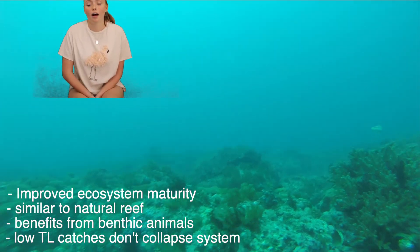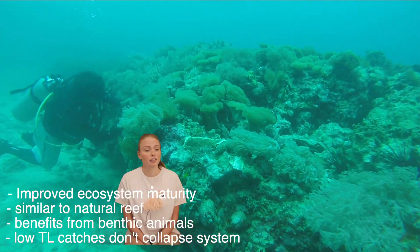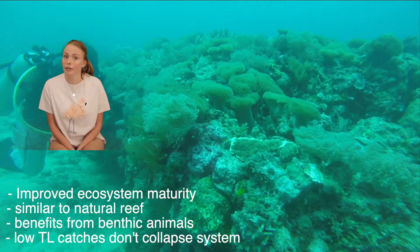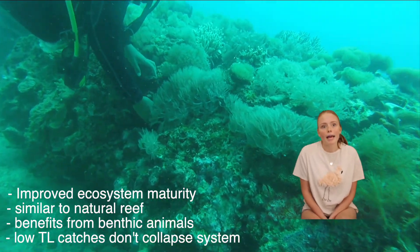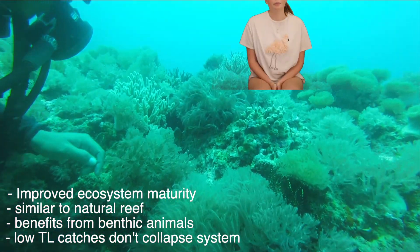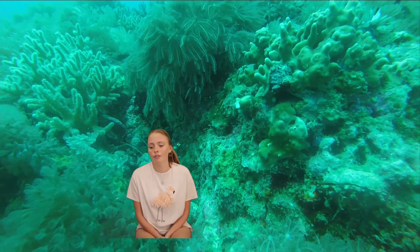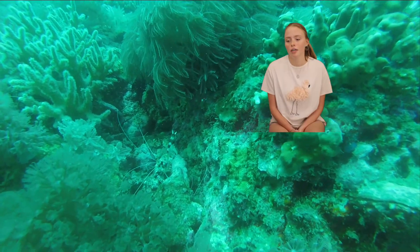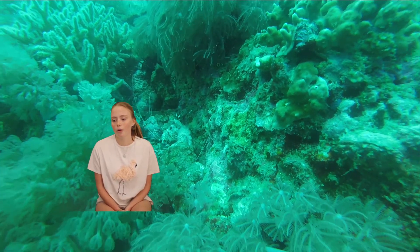This study highlights that the artificial reef system improved ecosystem maturity. It has proven to be similar to a natural reef system. It enhances the benefits from benthic animals and low level catches do not cause the system to collapse. The implementation of this system was for a commercial harvest and through the artificial reef we can see an increased yield even with two species, Chiponicus and Arvinosa, under intense fishing pressure.